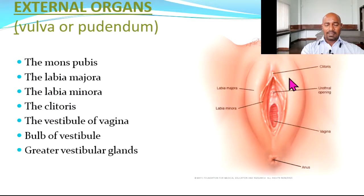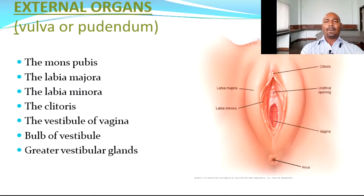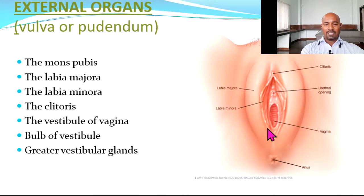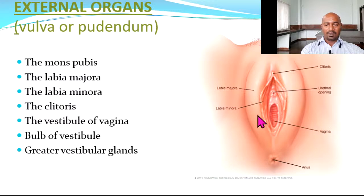The bulb of the vestibule is erectile or cavernous tissue present underneath the labia majora and minora. In males the two fuse together and cover the bulb of the penis or bulbospongiosus, but in females the labia majora do not fuse, so the two bulbs remain separate and cause the elevation of the labia majora on either side. There are greater vestibular glands, similar to the bulbourethral glands in males, present on the sides; they secrete lubricating material for intercourse.